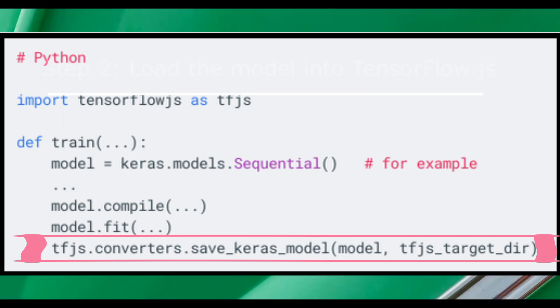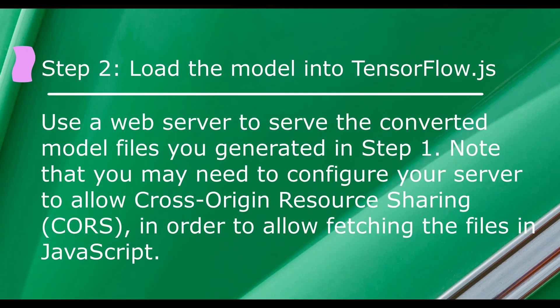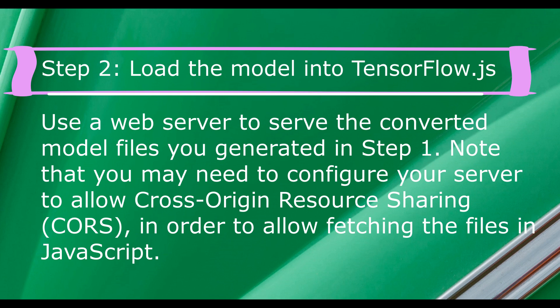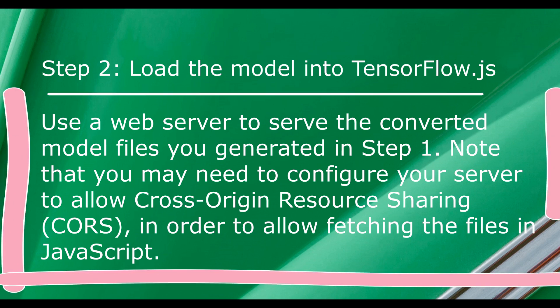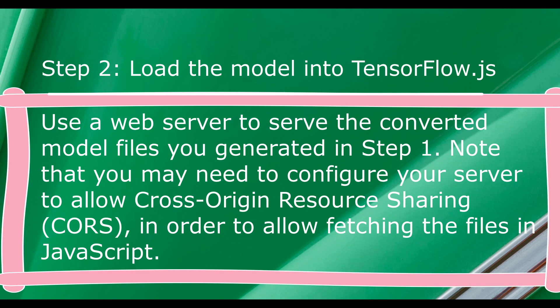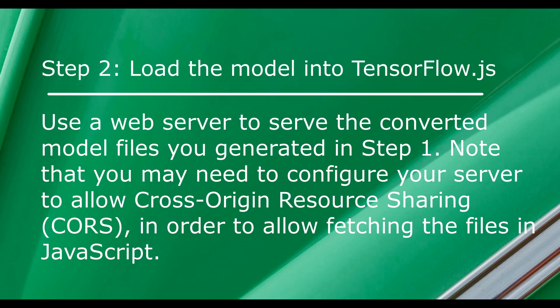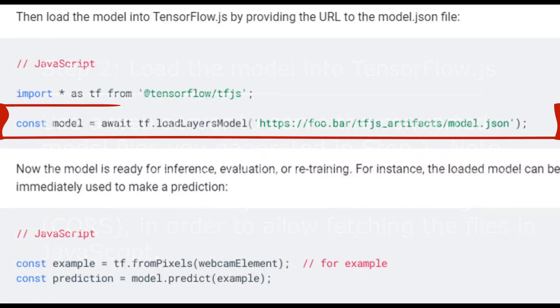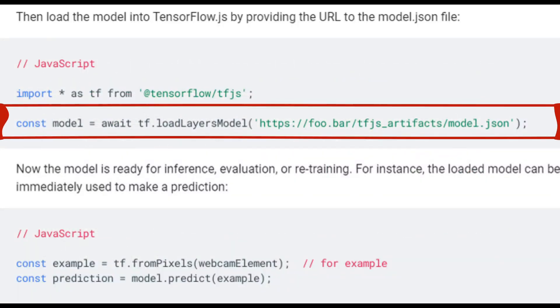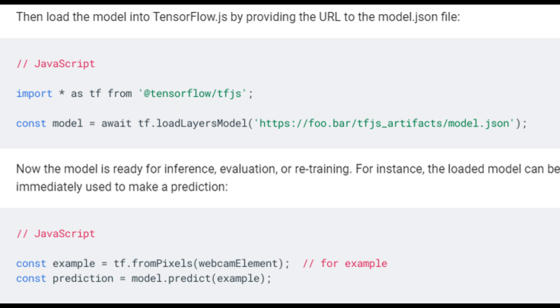Step 2: Load the model into TensorFlow.js. Use a web server to serve the converted model files you generated in Step 1. Note that you may need to configure your server to allow cross-origin resource sharing (CORS) in order to allow fetching the files in JavaScript. Then load the model into TensorFlow.js by providing the URL to the model.json file. The model is now ready for inference, evaluation, or retraining. For instance, the loaded model can be immediately used to make a prediction.